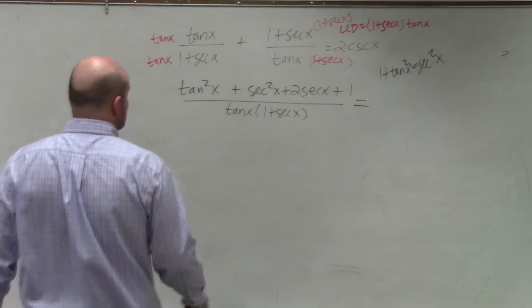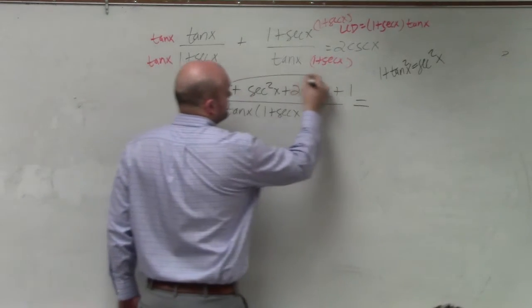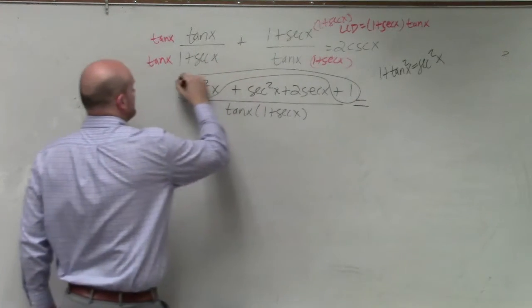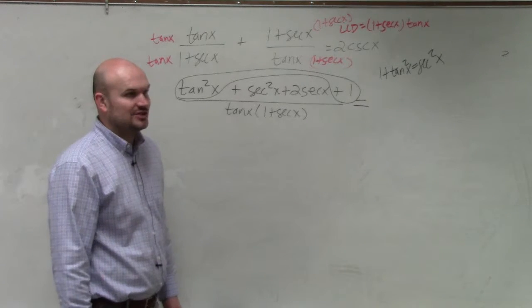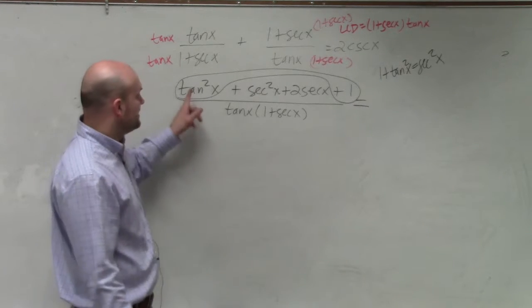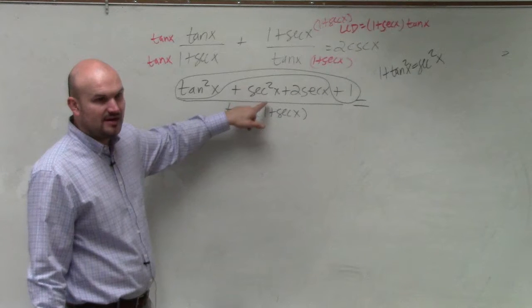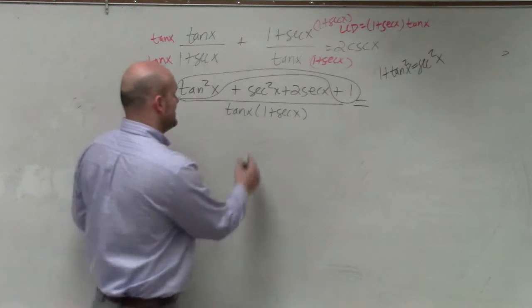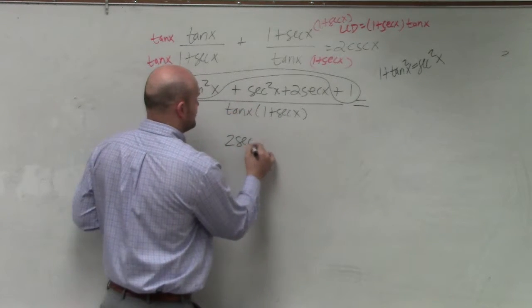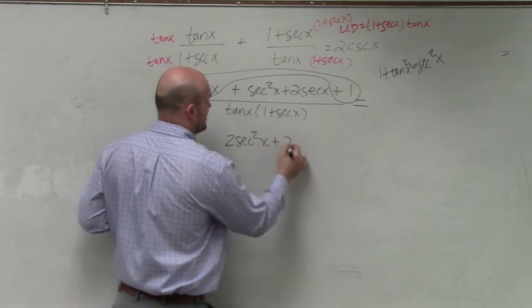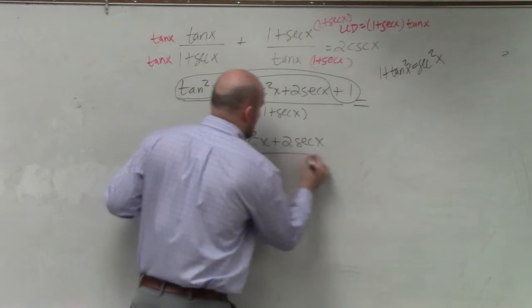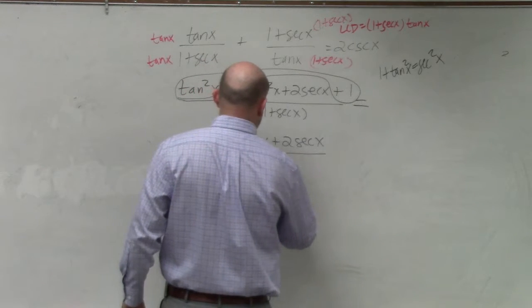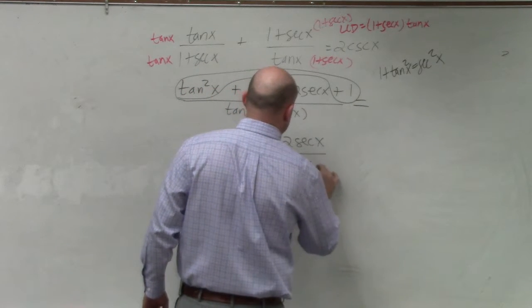So if you guys notice here, tan²x + 1 is equal to sec²x. And then, could I add that sec²x to this sec²x? I could do that, and therefore I would obtain 2sec²x + 2sec x all over tan x times (1+sec x).